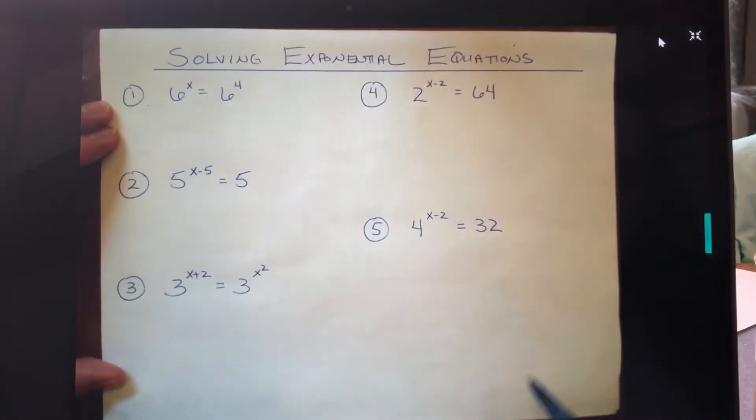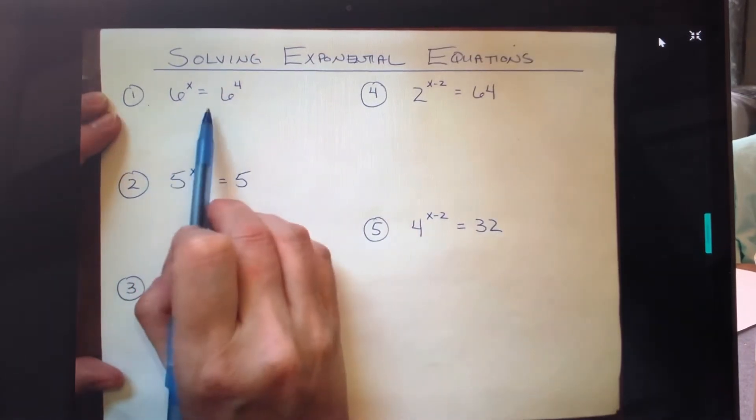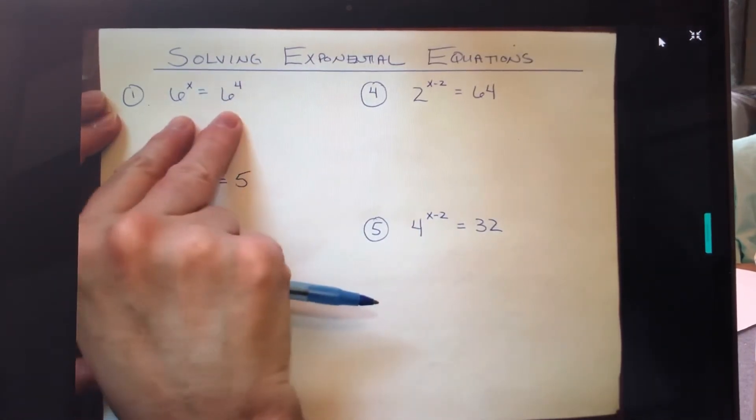So let's get started with some examples. I have five examples here that are fairly representative of the different types of problems that you might encounter when you're solving exponential equations that are indeed one-to-one.